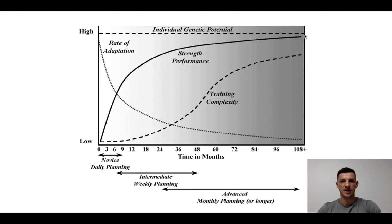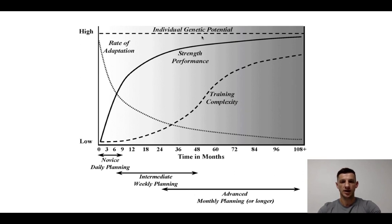Here we have rapid growth, and then we start to slow down approximating our genetic potential. This graph illustrates the fact that the need for training complexity grows in proportion to the rate at which we close our adaptation window.